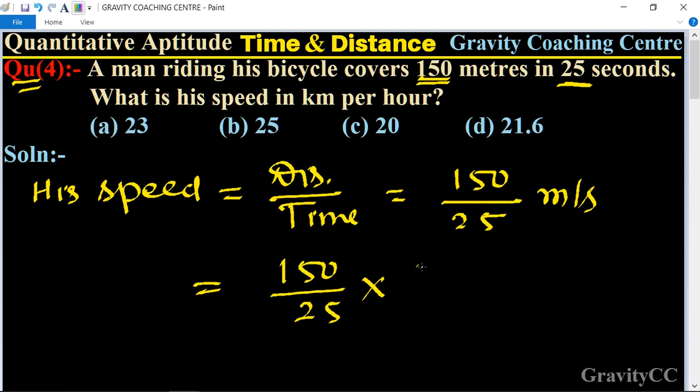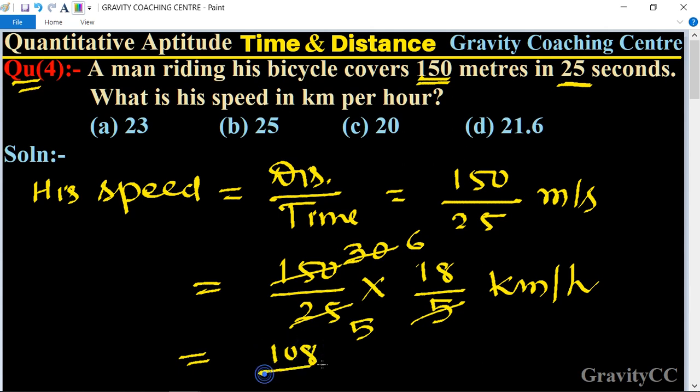So now we multiply this fraction by 18 upon 5 kilometer per hour. Cancel by 5, 3 times, and cancel by 5, 6 times, 5 times, and 5 times. So it is equal to 108 upon 5 kilometer per hour.